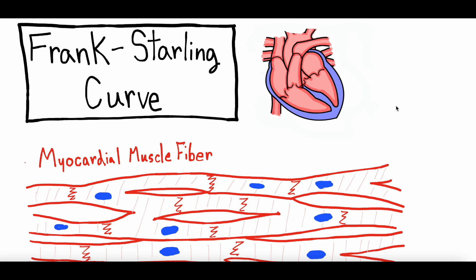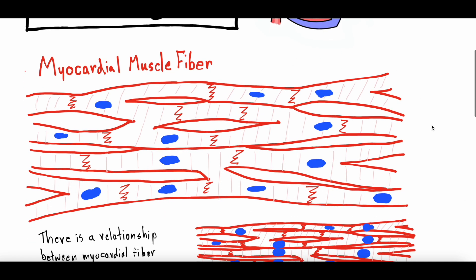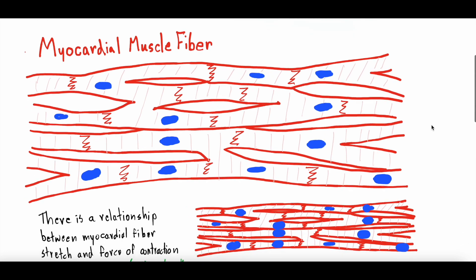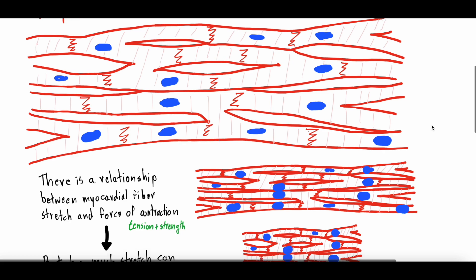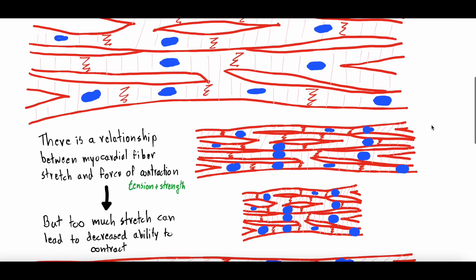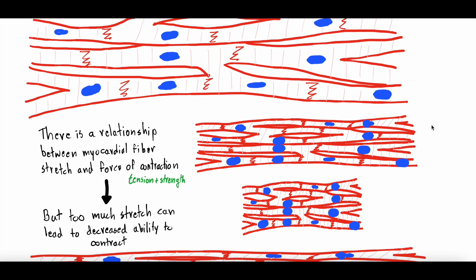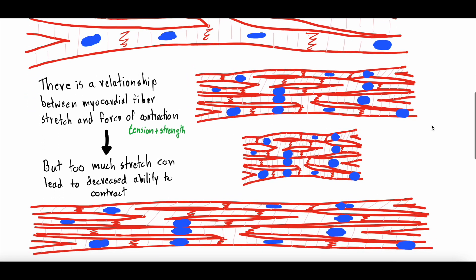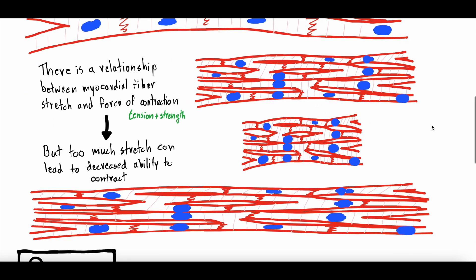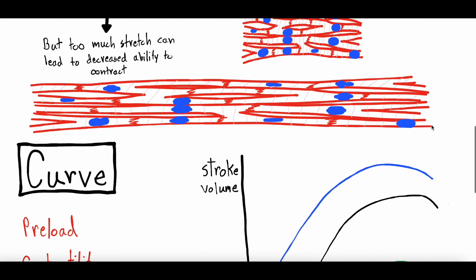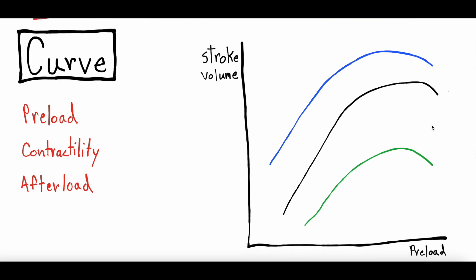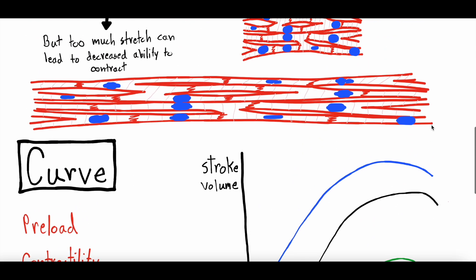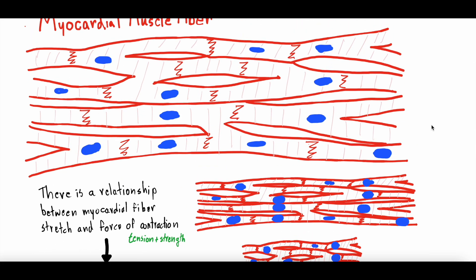We're going to talk about the Frank-Starling Curve — starting out by talking about the myocardial muscle fiber, the sarcomere, because to understand the Frank-Starling Curve is to understand the relationship of the heart muscle and those cells: tension, stretch, strength, contraction. All those are why the Frank-Starling Curve looks the way it is. We'll then get into the curve itself, talk about the normal curve, what affects it, what can shift it up or shift it down.